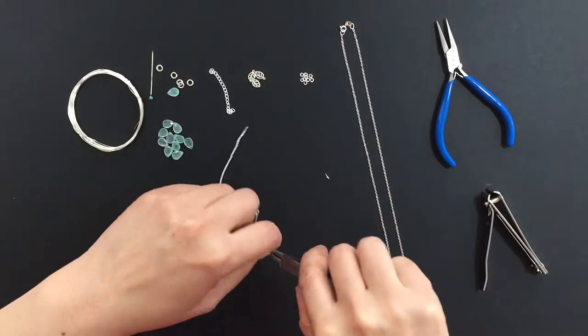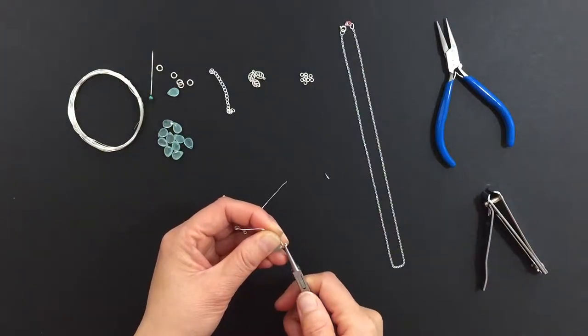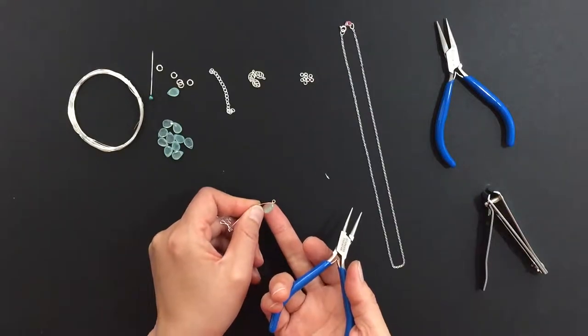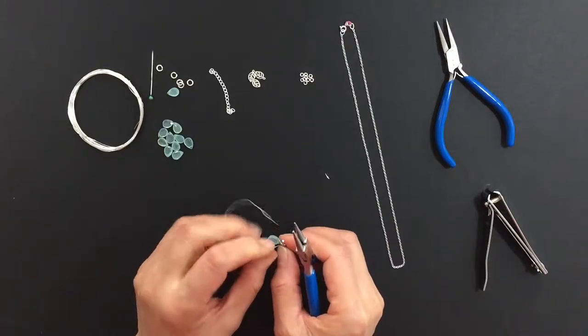Wrap the longer piece of wire with round nose pliers and wrap it around to form a loop. Slide the loop onto the connector.